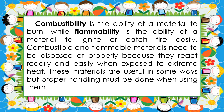Combustibility and flammability are examples of chemical properties. Combustibility is the ability of a material to burn, while flammability is the ability of a material to ignite or catch fire easily. Combustible and flammable materials need to be disposed of properly because they react readily and easily when exposed to extreme heat. These materials are useful in some ways, but proper handling must be done when using them.